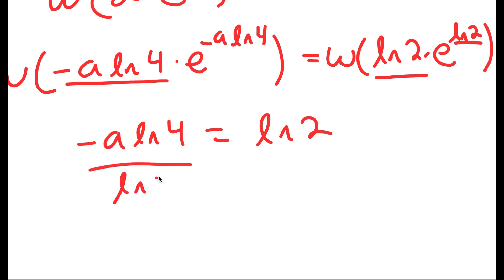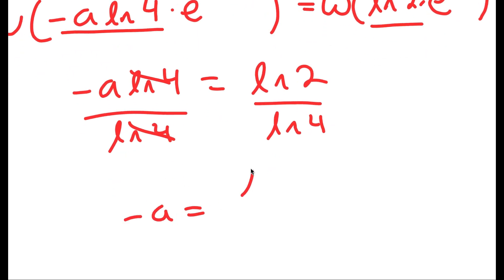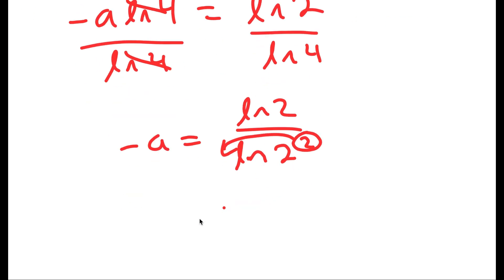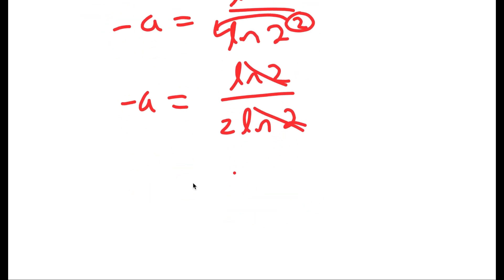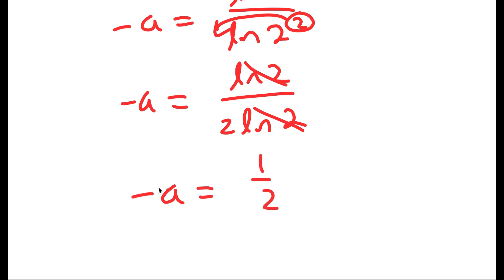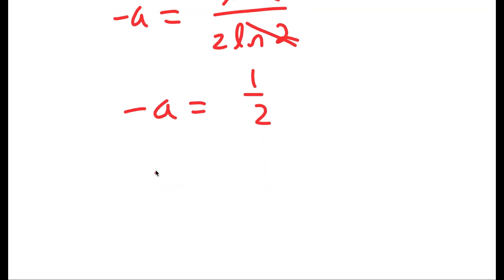So I have negative a times ln 4 is equal to ln 2. I divide both sides by ln 4, giving negative a equals ln 2 over ln 4, which is the same as ln 2 over ln 2 squared. Moving the 2 to the front gives ln 2 over 2 times ln 2, and these cancel out so negative a equals positive one half. Finally, multiplying both sides by negative 1, I get a is equal to negative one half.